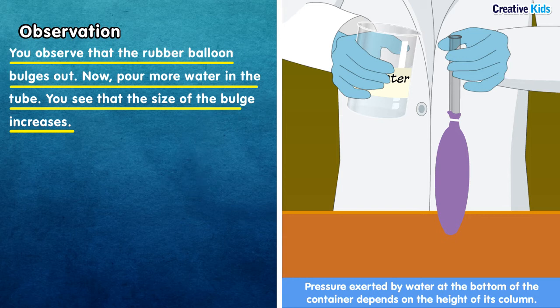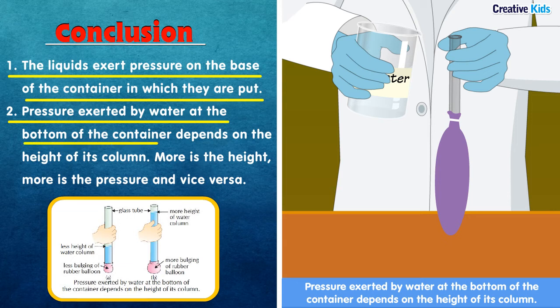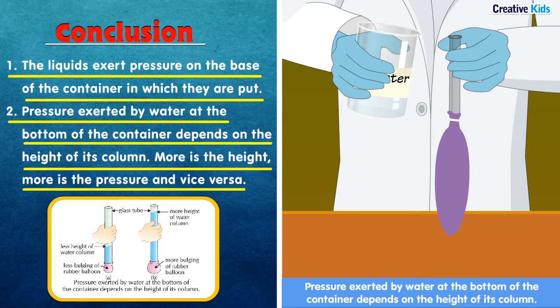Conclusion from this activity: First, the liquid exerts pressure on the base of the container in which it is put — because of the pressure exerted by the water, the rubber balloon gets bulged. Second, the pressure exerted by water at the bottom depends on the height of its column. More height means more pressure; lesser height means lesser pressure. More water increases the column height, increasing liquid pressure and causing more bulging.